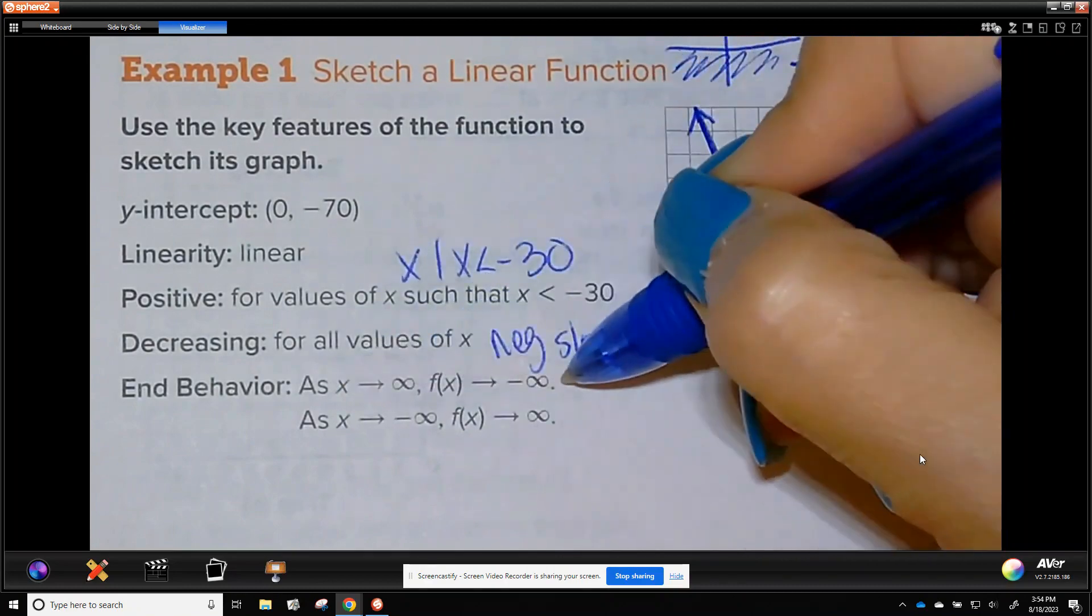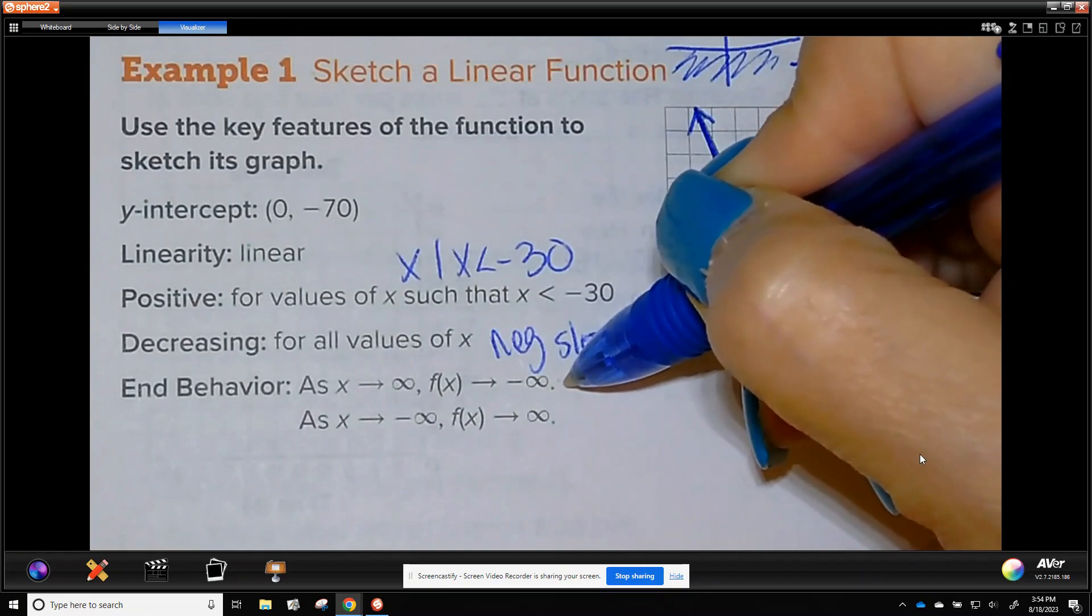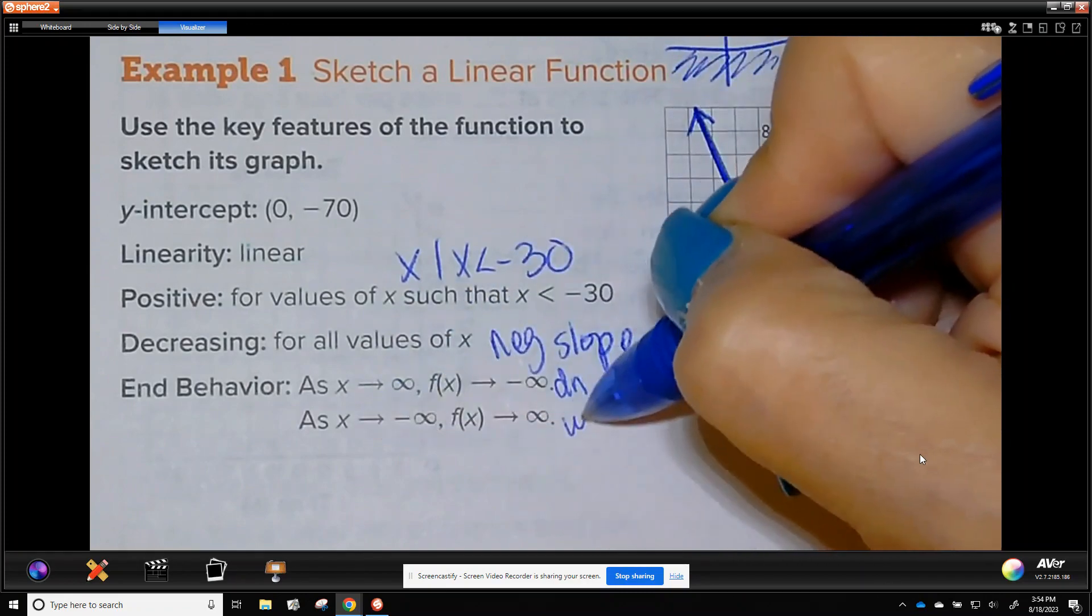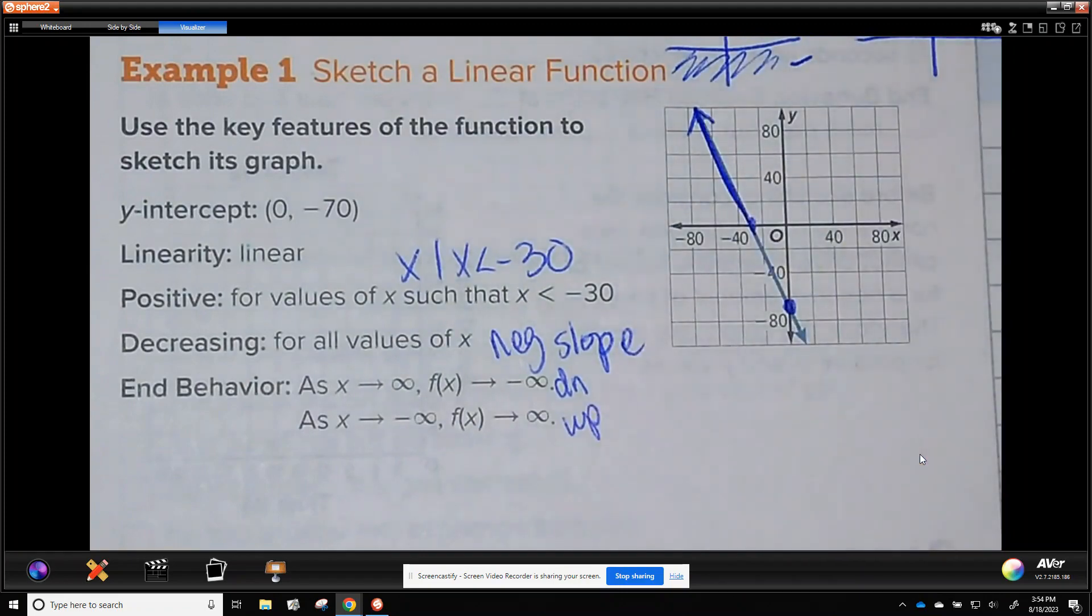And then here's our end behavior. The right side it's going down and the left side negative infinity is going up. So there's our graph. Easy to see when it's already drawn for you.